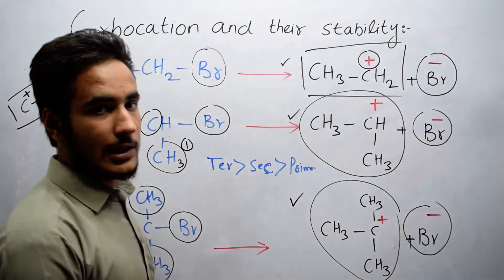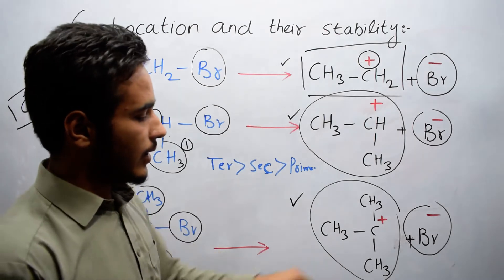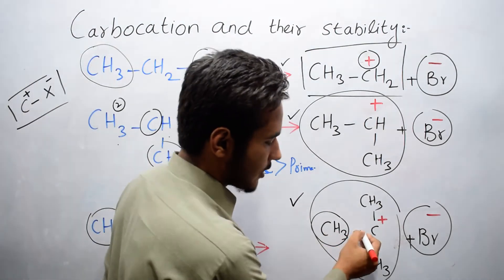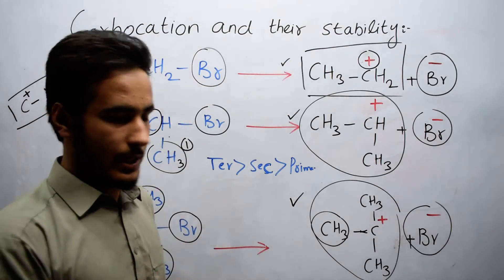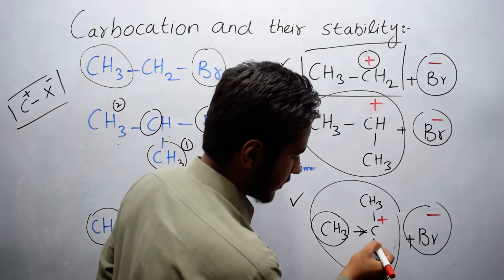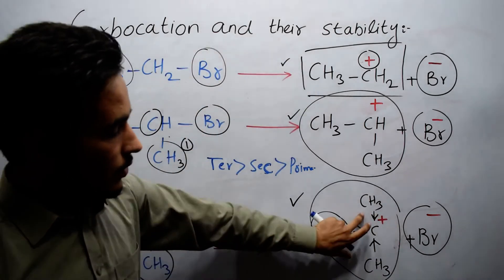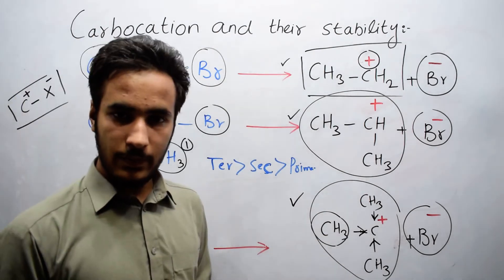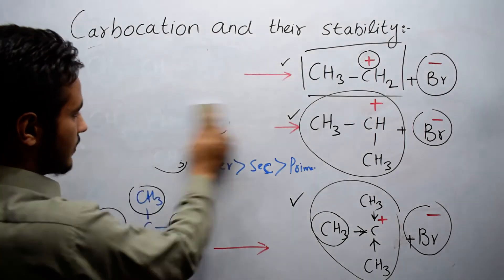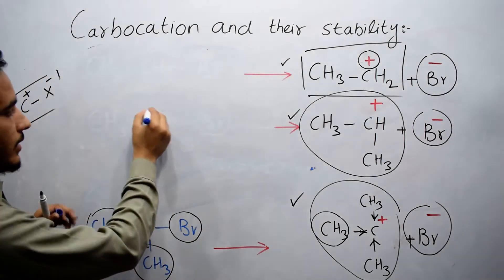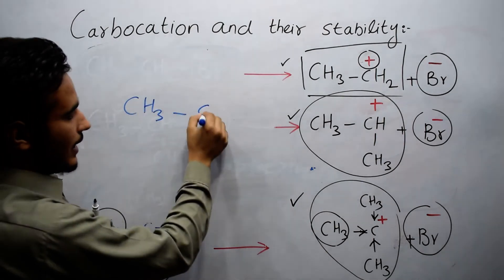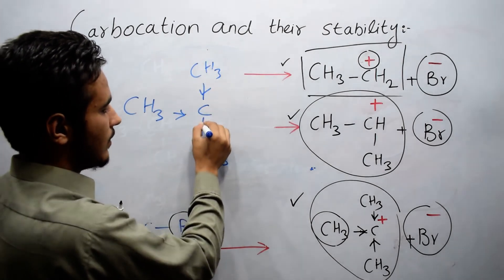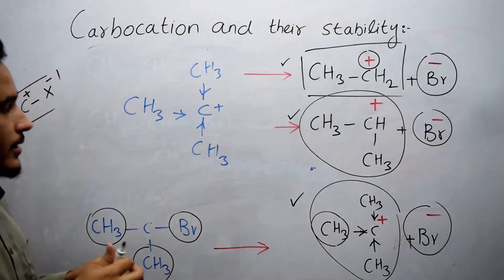The reason is that alkyl groups are substituents attached to the main chain, and they donate their electrons toward the positive charge on the carbon. In a tertiary carbocation we have three alkyl groups all releasing electrons toward the positively charged carbon, so the electron density on that carbon increases.